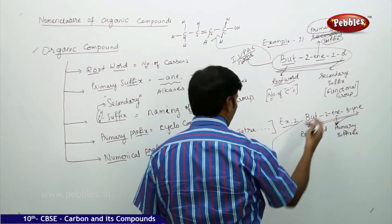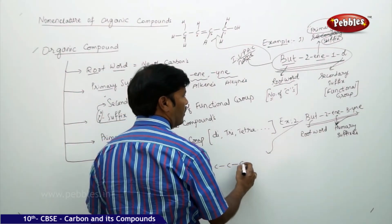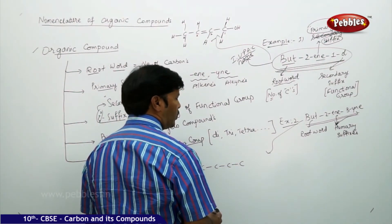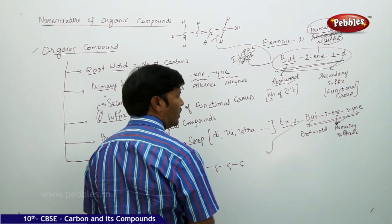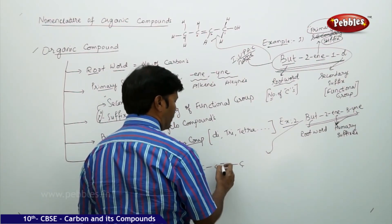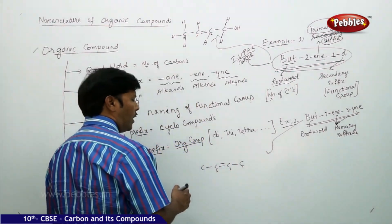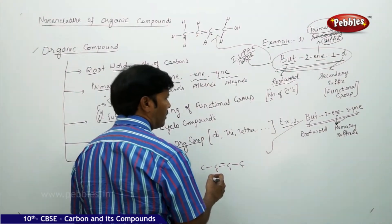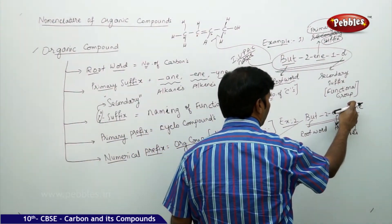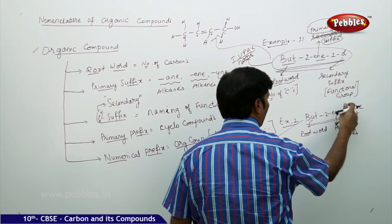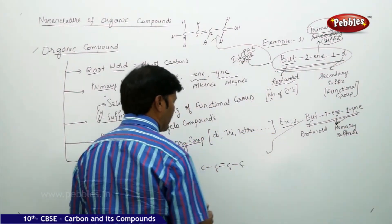Similarly, if you go for but-2-en-3-yne: taking carbons 1, 2, 3, 4 — the condition doesn't accept 'but-2-en-3-yne', because the numbering rules are not satisfied. You would need to change it — either rename it to but-1-yne or change the root word to 'pent' and make it pent-3-yne, which is much better.